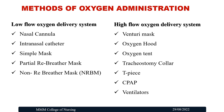Moving on to the methods of Oxygen Administration, there are two types: Low Flow Oxygen Delivery System and High Flow Oxygen Delivery System. Examples of Low Flow include Nasal Cannula, Intranasal Catheters, Simple Mask, Partial Rebreather Mask, and Non-Rebreather Mask. Examples of High Flow include Venturi Mask, Oxygen Hood, Oxygen Tent, Tracheostomy Collar, CPAP (Continuous Positive Airway Pressure), and Ventilators.